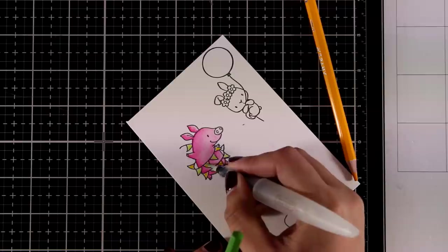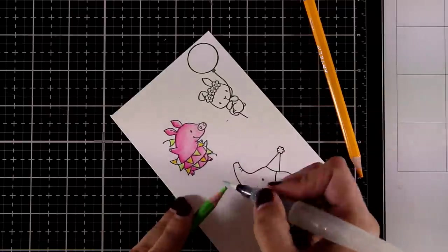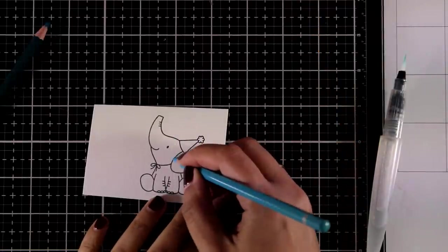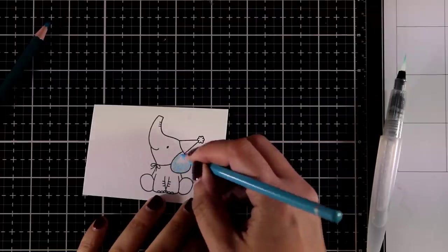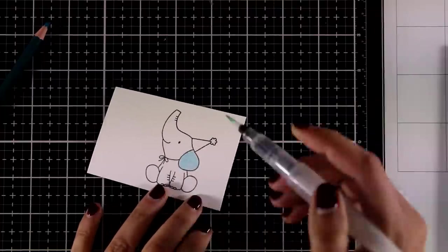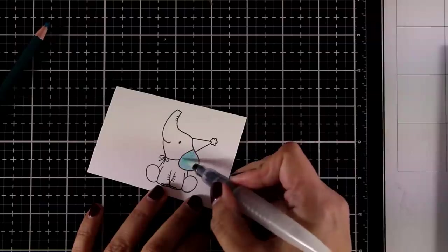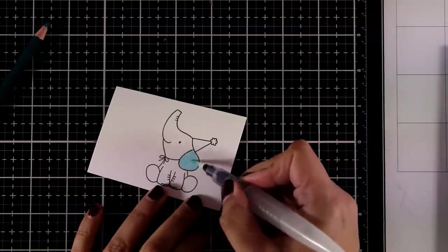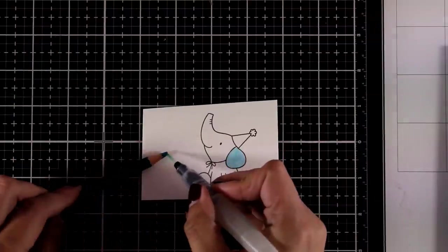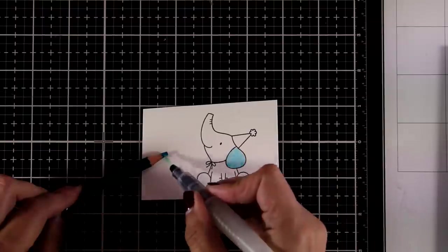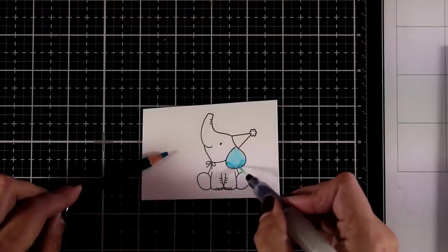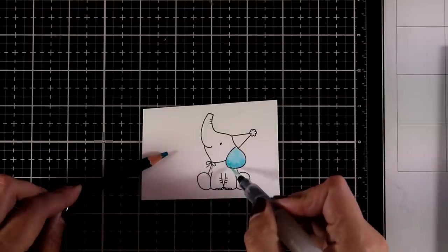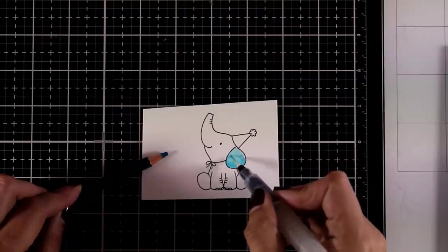For my adorable elephant, I decided to go with shades of blue. Again, I'm applying the first layer very lightly. I'm going to blend it out, have a nice smooth area, and now with a darker blue I'm going to add my shadows.